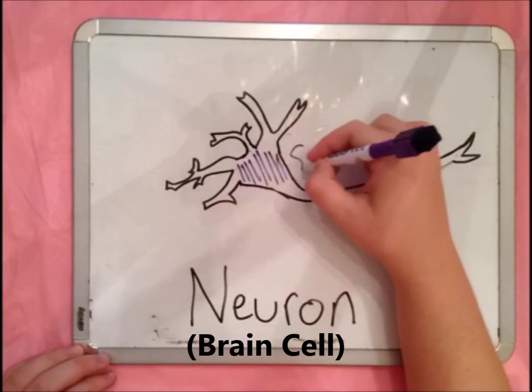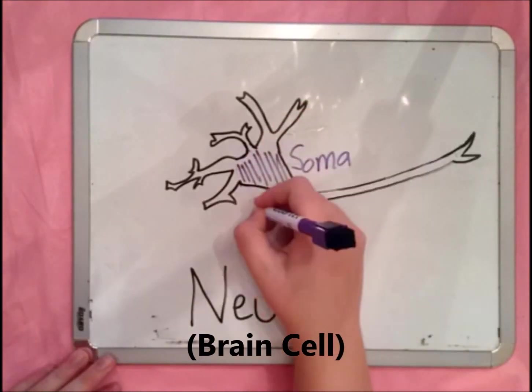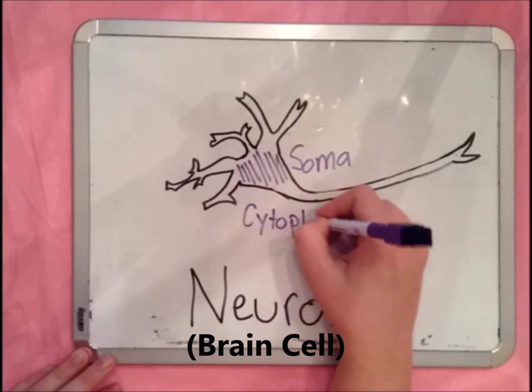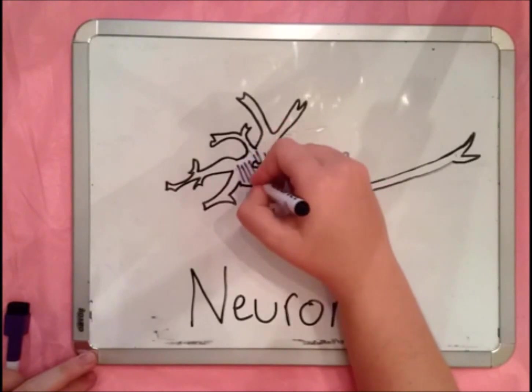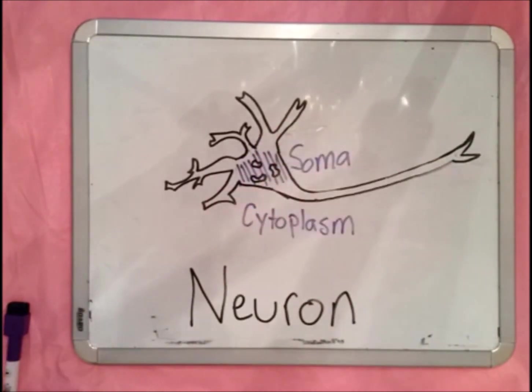The cell body of the neuron, called the soma, is filled with a gel called the cytoplasm. Inside the cytoplasm are little mini-organs, called organelles, that are necessary for proper functioning and maintenance of the cell, often in the form of energy or protein production.